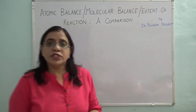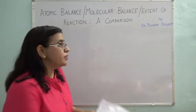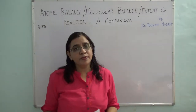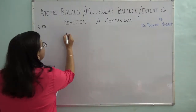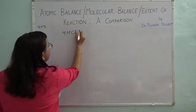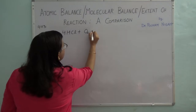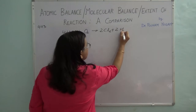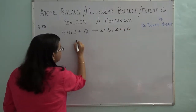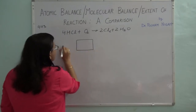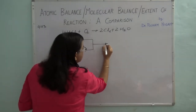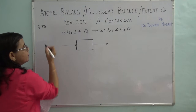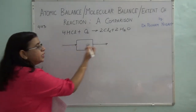Today I am going to take problem 4.43 from Felder — you can go and see the problem statement if you want to. The problem is: you are reacting hydrogen chloride with oxygen to give chlorine plus water. This is being carried out in a reactor. You should always make a flowchart because it makes your thinking very logical and systematic.